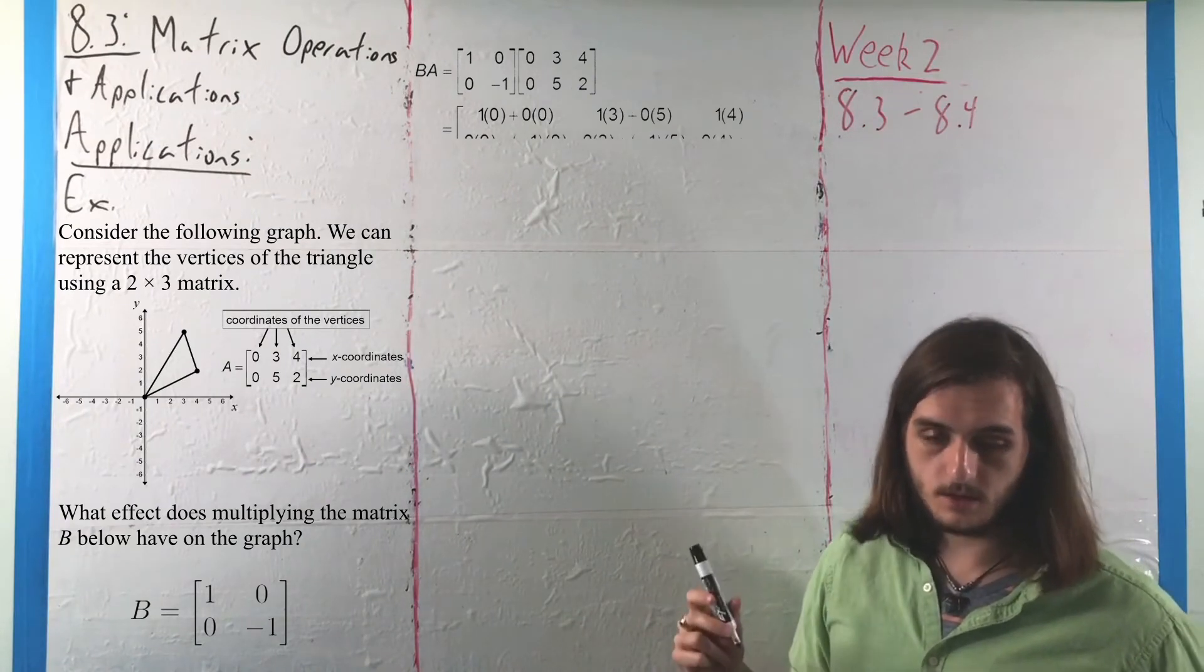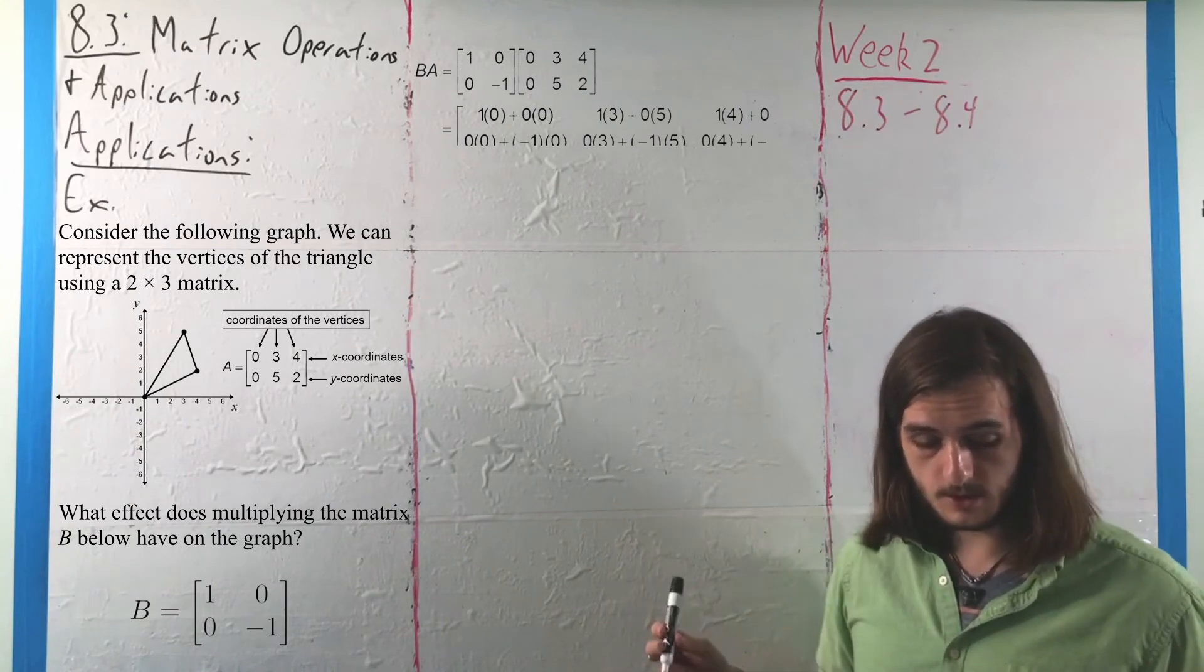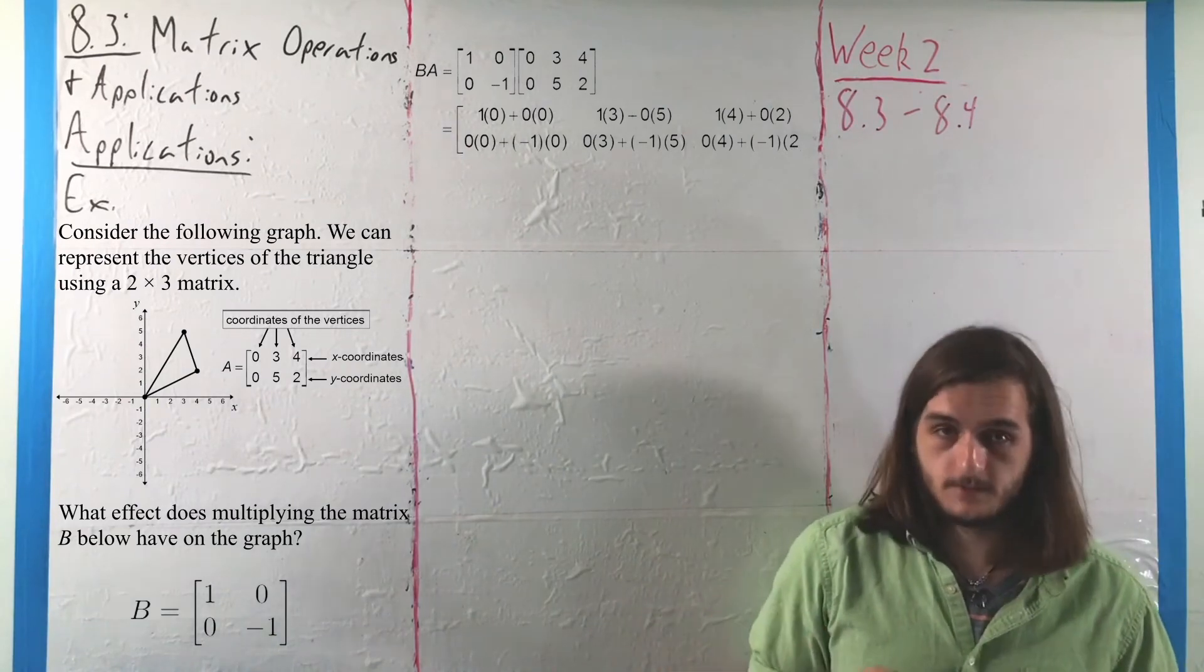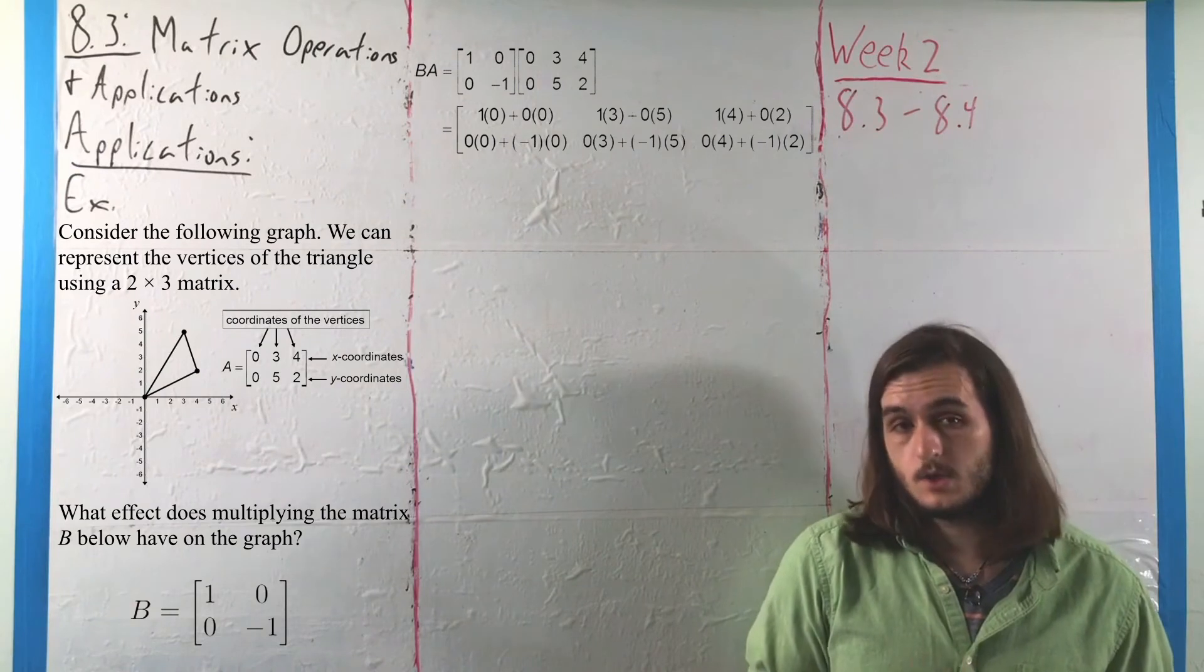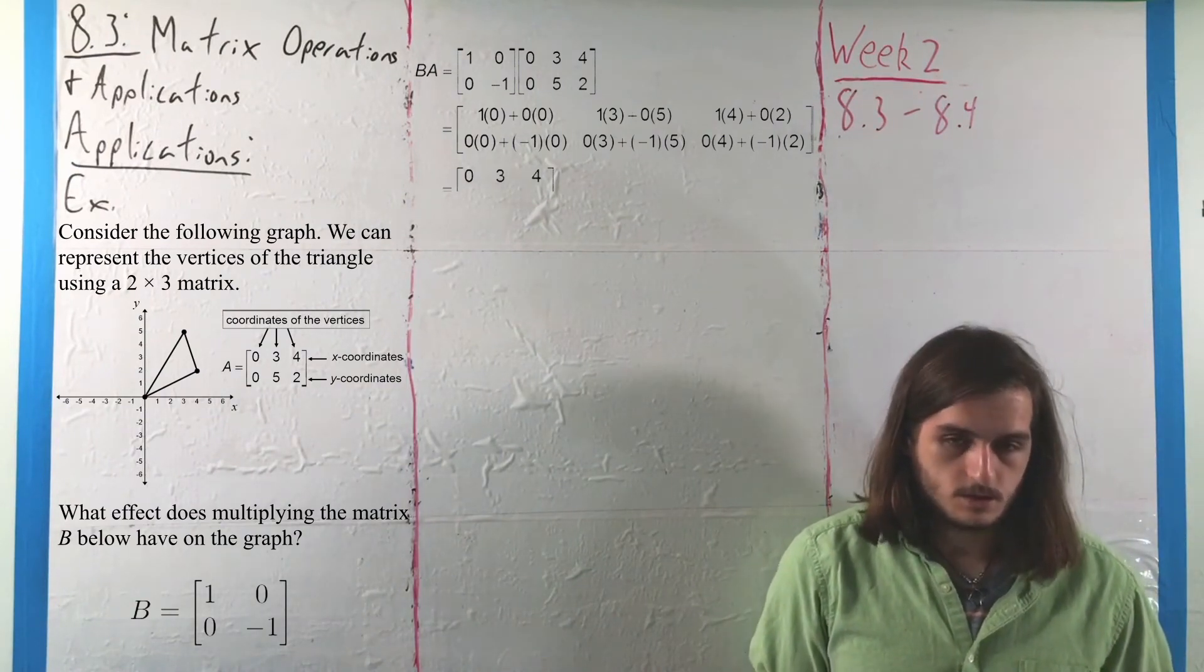And 0 times 0 plus negative 1 times 0, 0 times 3 plus negative 1 times 5, and 0 times 4 plus negative 1 times 2 in the second row, for a total matrix of 0, 3, 4, 0, negative 5, 2.